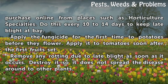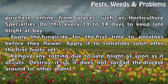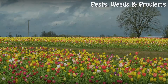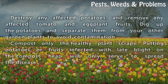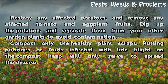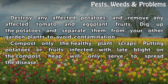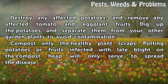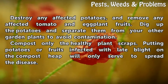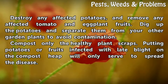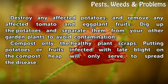Remove any rotting due to late blight as soon as it occurs and destroy it so it does not spread the disease to other plants. Destroy any affected potatoes and remove any affected tomato and eggplant fruits. Dig up the potatoes and separate them from your other garden plants to avoid contamination. Compost only the healthy plant scraps — putting potatoes or fruits infected with late blight on the compost heap will only serve to spread the disease.